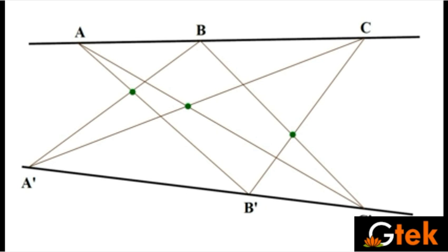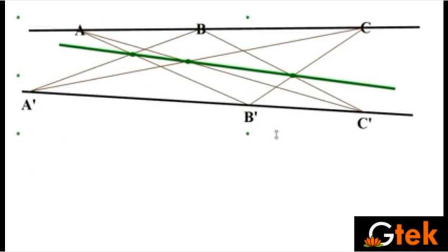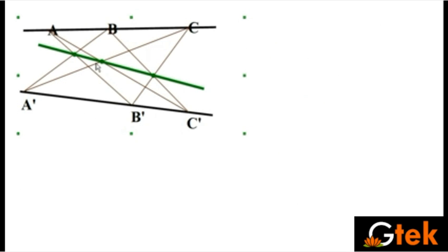Pascal's Theorem states that these three intersection points will always be collinear, regardless of the configuration. As I adjust the shape, you can see the three points remain on a straight line. This is Pascal's Theorem.